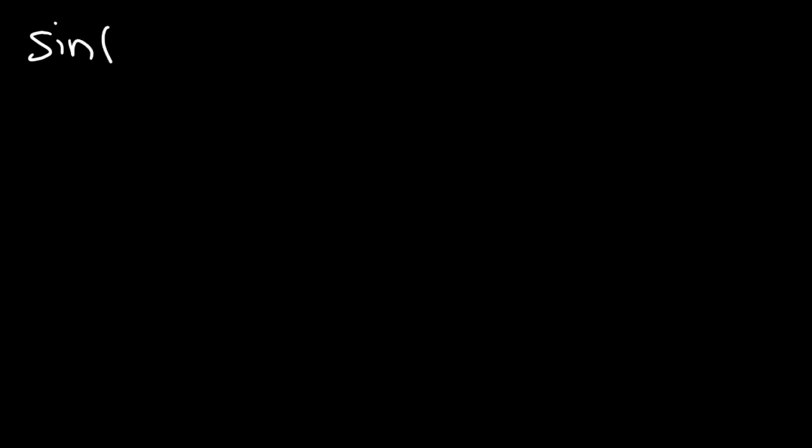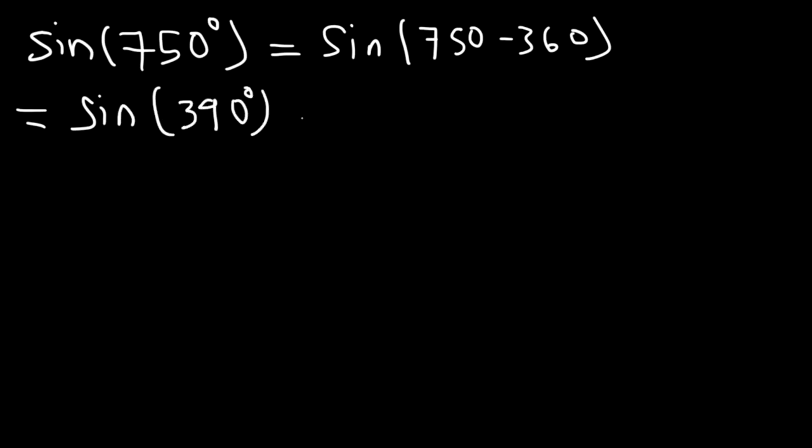Let's try one more example. Sine of 750 degrees. Go ahead and evaluate that one. So using periodic properties, let's bring the angle down. Let's subtract it by 360. 750 minus 360 is 390. So sine of 750 is equivalent to sine of 390. Now 390 is still high, so let's subtract that by 360 one more time. And so we're going to get sine 30.